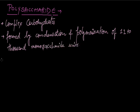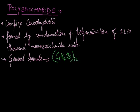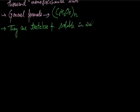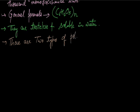The general formula for polysaccharide is (C6H10O5)n. They are tasteless and soluble in water. There are two types of polysaccharides.